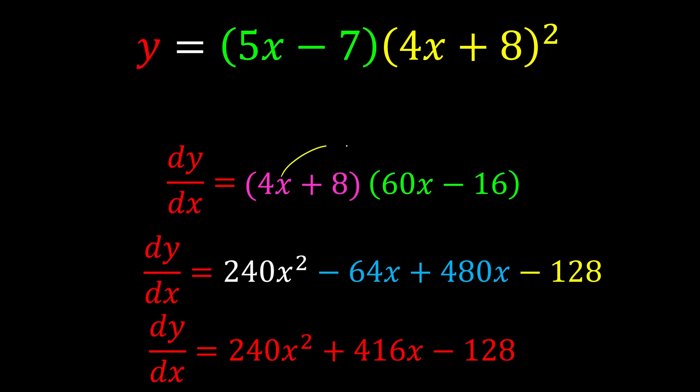If you expand it, 4x times 60 is 240x². 4x times -16 is -64x. 8 times 60 is 480x. And 8 times -16 is -128.